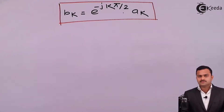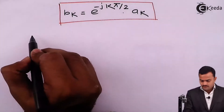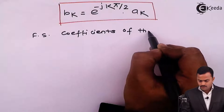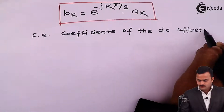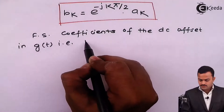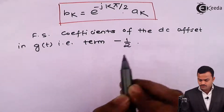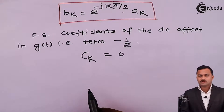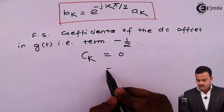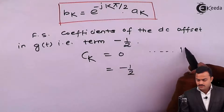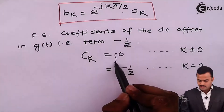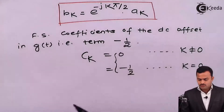This coefficient bK is obtained just from X(T−1). Now let's find the coefficient contributed by the constant term minus 1/2. The Fourier series coefficient of the DC offset — that is the term minus 1/2 — will give a coefficient of 0 for K not equal to 0, because there is no signal present, only a constant. So CK = 0 for K ≠ 0, and CK = −1/2 for K = 0, since it is a DC offset.